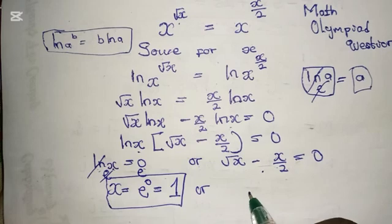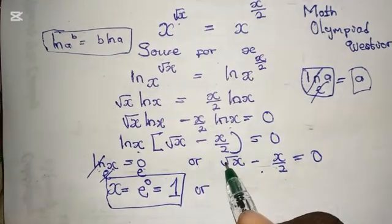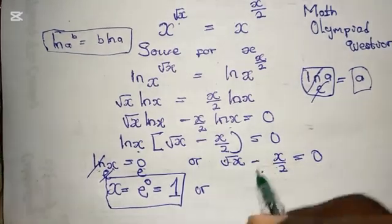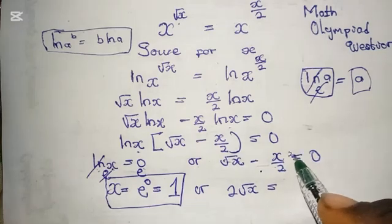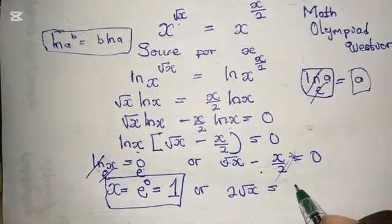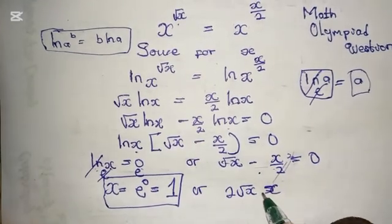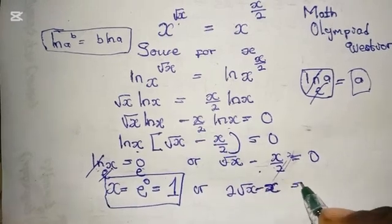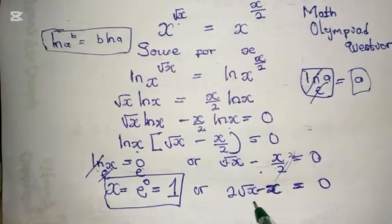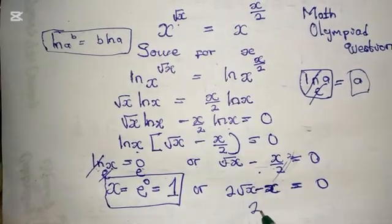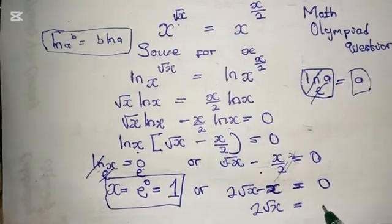Now, multiply both sides by 2 to eliminate the fraction. So √x multiplied by 2 gives us 2√x. This multiplied by 2 also, we can cancel each other. So we're left with negative x. And 0 multiplied by 2 equals 0.